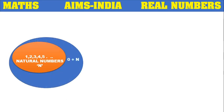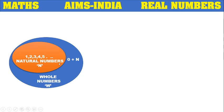If we add 0 to the natural numbers, then the second set of numbers is called whole numbers, and the symbol for whole numbers is W. So in the whole number system, along with the natural numbers, 0 is included.